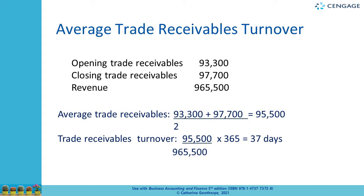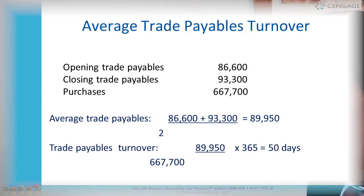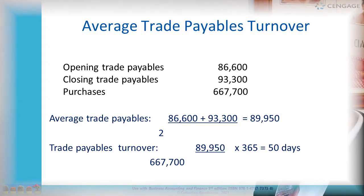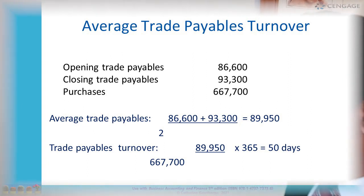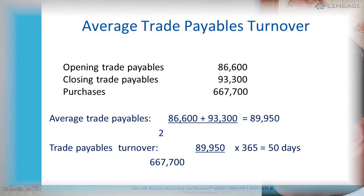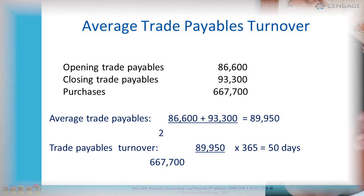Next is trade payables — how long the business takes to pay its suppliers. We have opening and closing figures for payables and the purchases figures (purchases are always on credit). Average trade payables come to £89,950. Putting that into the formula — average trade payables divided by purchases, times 365 — gives us 50 days.